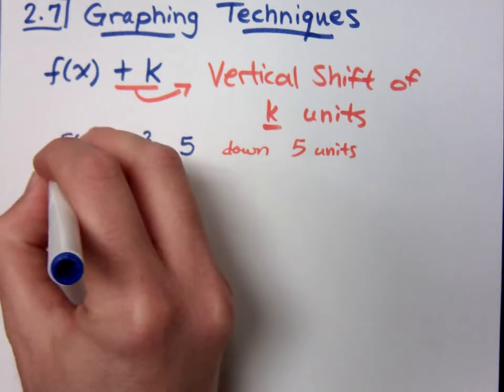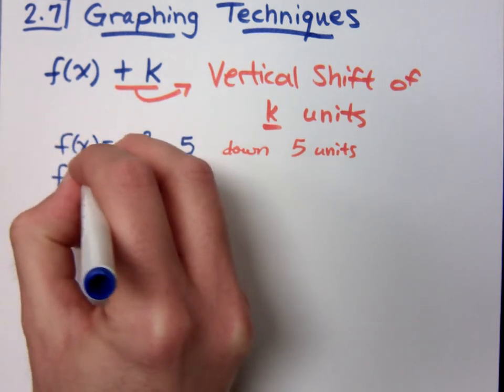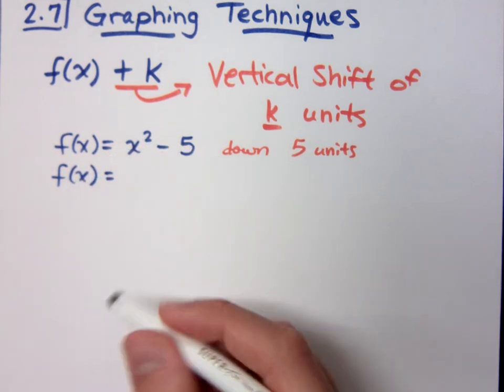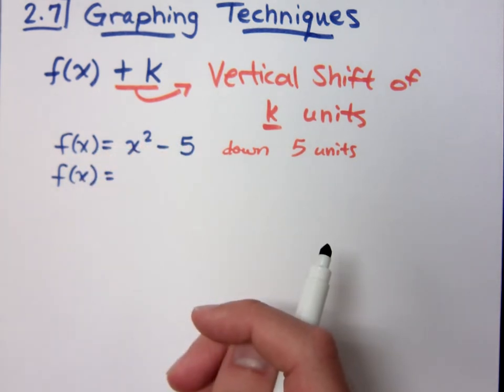And down from where? The vertex? You take all of the points. Everything you had, you're going to move everything down 5 units. The whole thing moves down. It's not just one or two points, but the whole thing.